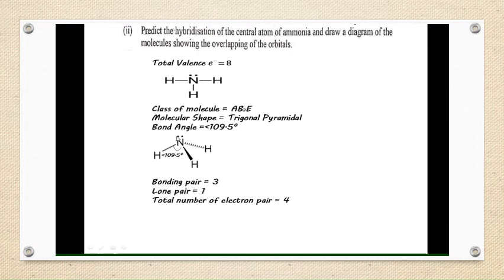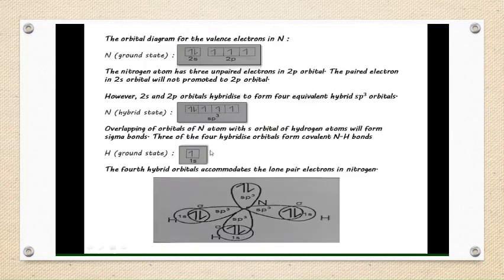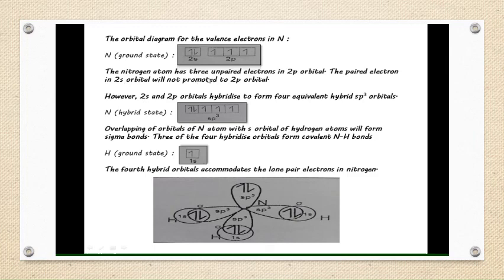Next, draw the orbital diagram for the valence electrons in N, which is the central atom. The valence electrons of N is 5, so we draw 5 electrons. The nitrogen atom has three unpaired electrons in the 2p orbitals. The paired electrons in the 2s orbital will not be promoted to the 2p orbitals, so we leave them as they are.